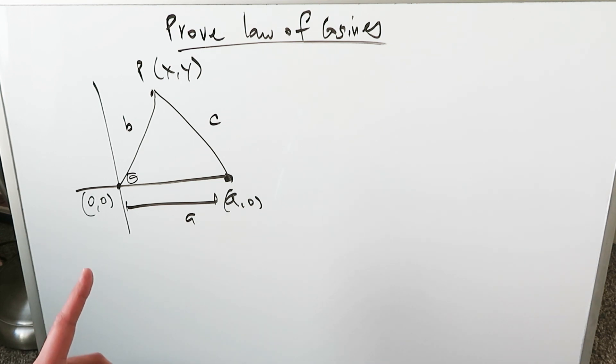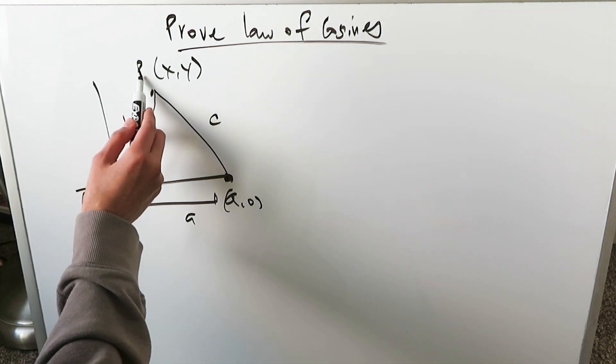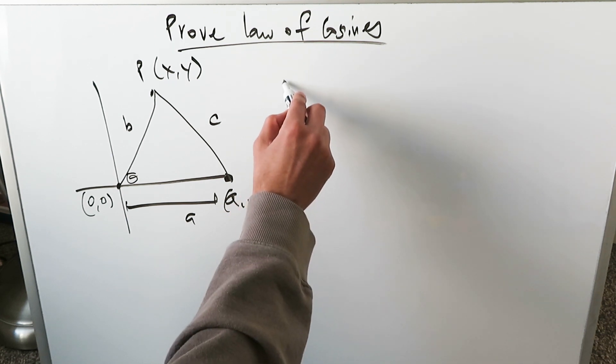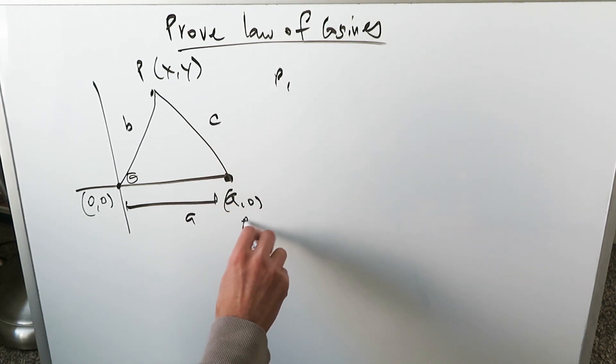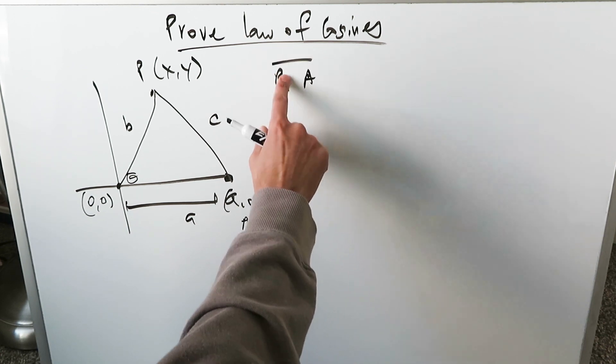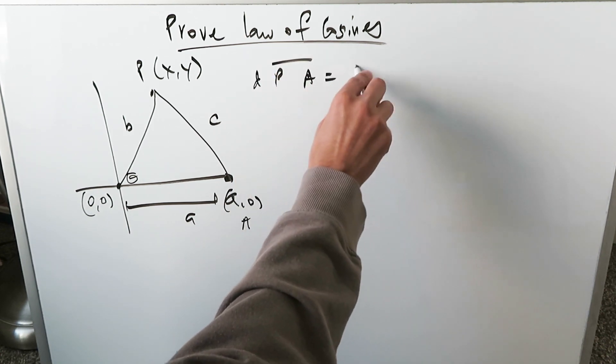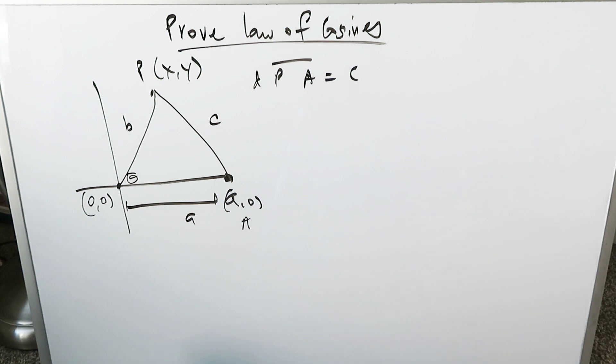You have to get those values for x and y. This point right here. If you were to find the distance of the segment P, and we'll call this point A, you were to find this segment distance, it would be equal to C. And that's the way you would do it.